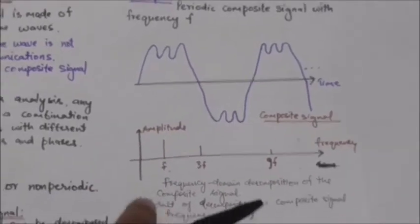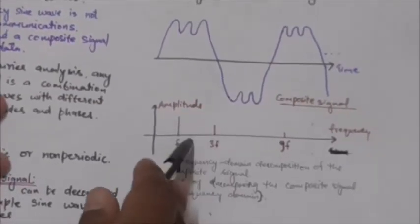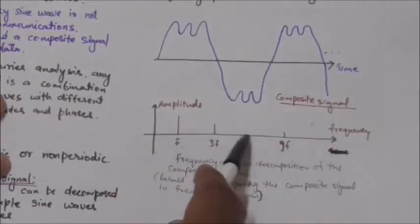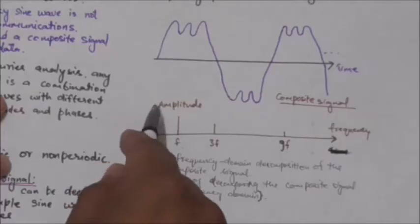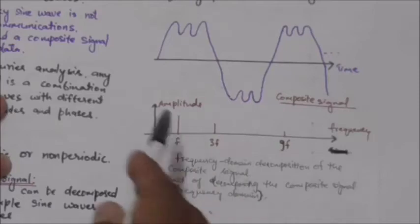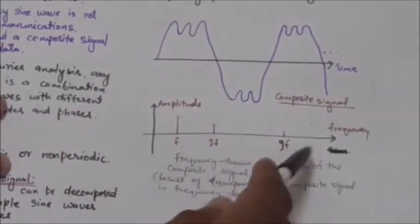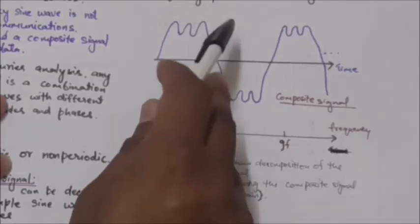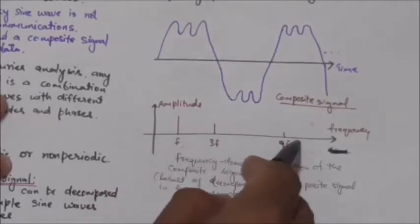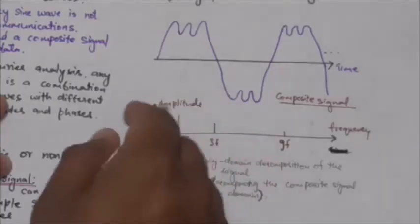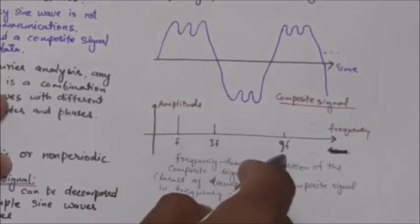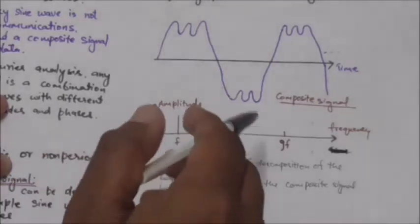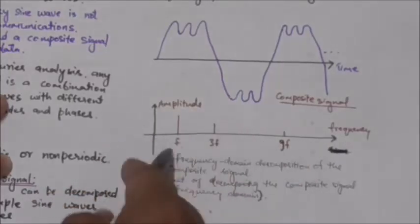This figure shows the result of decomposing this signal in the frequency domain. Here, this axis represents the frequency and this axis represents the amplitude. This composite signal is decomposed into three simple sine waves with frequencies f, 3f, and 9f. So in the frequency domain, this composite signal is decomposed into three simple sine waves.